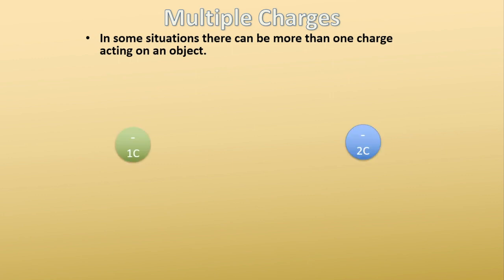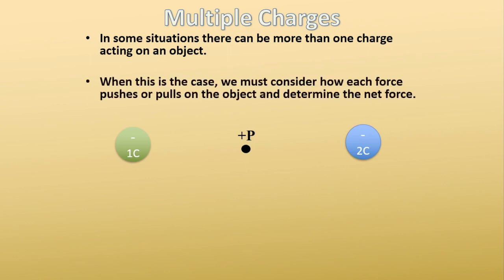So for instance, here's our basic case where we have two charges. But now we have a charge in between the two, and we're going to say that this positive P just denotes a positive test charge. When we're given a problem like this, we need to consider how much each force is pushing or pulling on the object and then determine the net force, because we have multiple forces at work here.